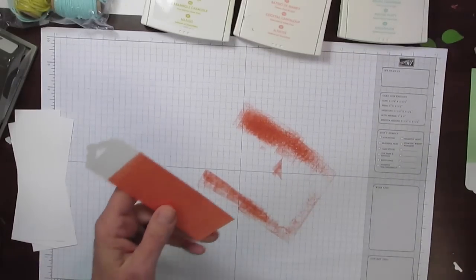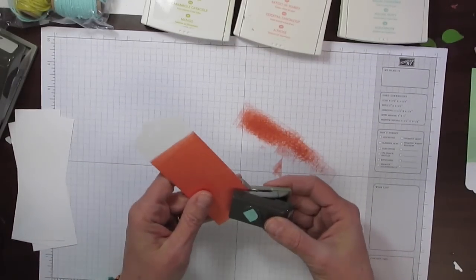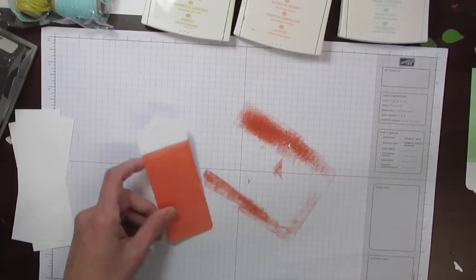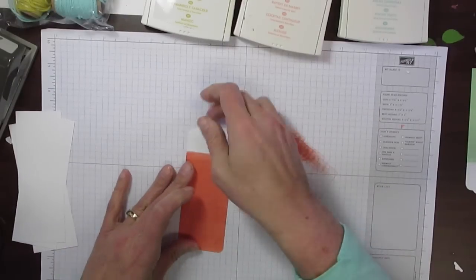Then I'm also going to come in with my Corner Rounder and just line those up in the corners and go ahead and trim my corners. I like that finished look of the rounded corners.